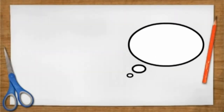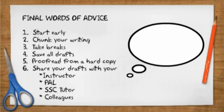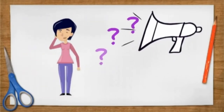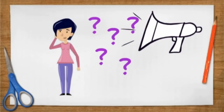Here are some final thoughts on the writing process. Procrastination is probably your greatest enemy, so make sure to start early. Don't try to write your paper all at once — break it down into smaller segments. Always proofread your paper; don't depend on spell check. It's best to proofread from a hard copy using triple spacing so that you have room to make comments. Take breaks, and if you start early enough, you can have a day or two between writing stages. Most importantly, never be afraid to ask for help.